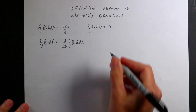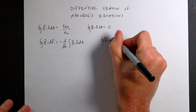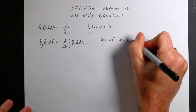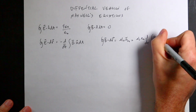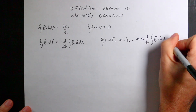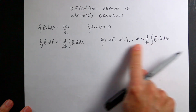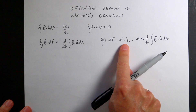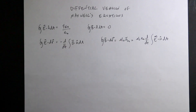We have something similar for the magnetic field. If you integrate B dot dR around a closed path, it equals mu-naught I-enclosed plus mu-naught epsilon-naught times the derivative with respect to time of the integral of E dot N-hat dA. A changing electric flux produces a magnetic field, and so does moving charge. We don't have a moving magnetic charge term because we have no magnetic monopoles. These are Maxwell's equations in integral form.